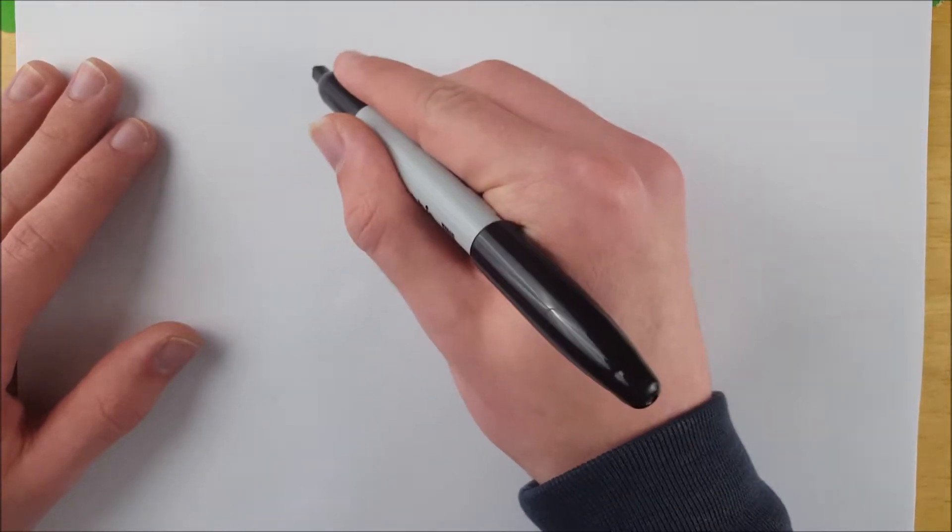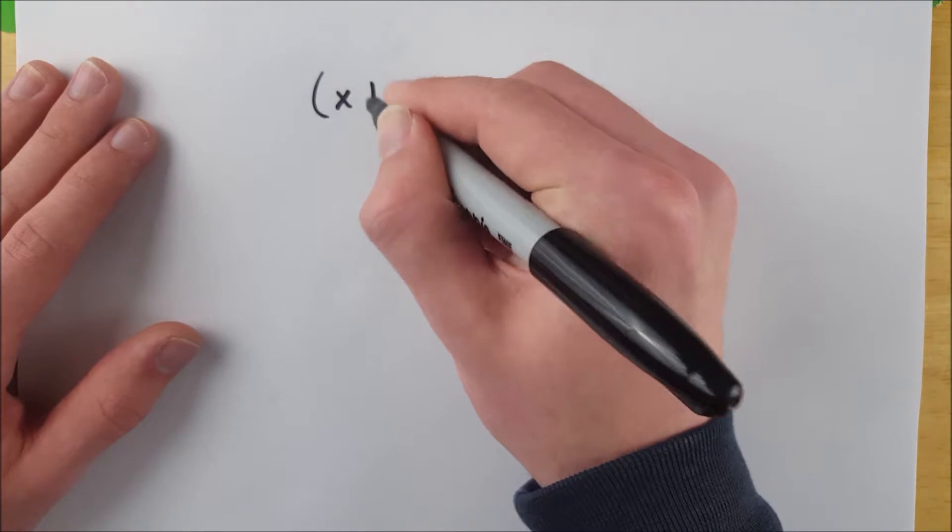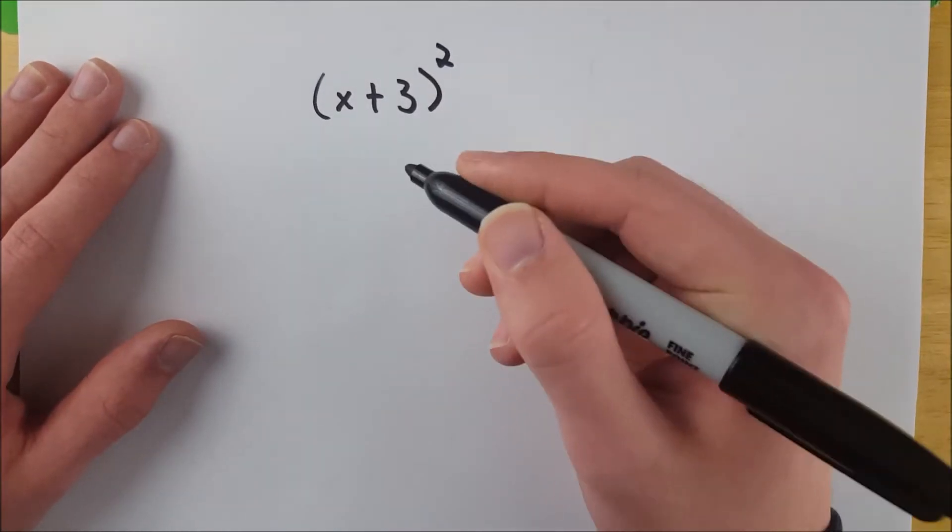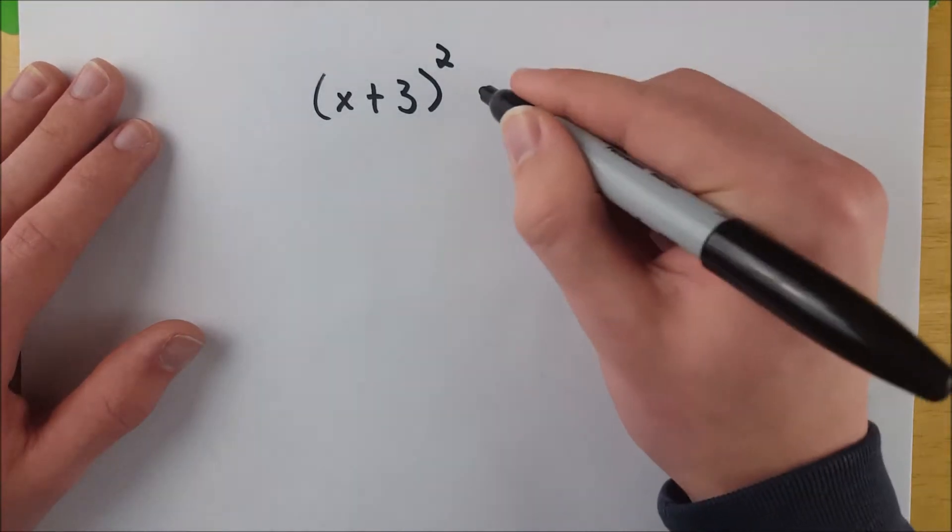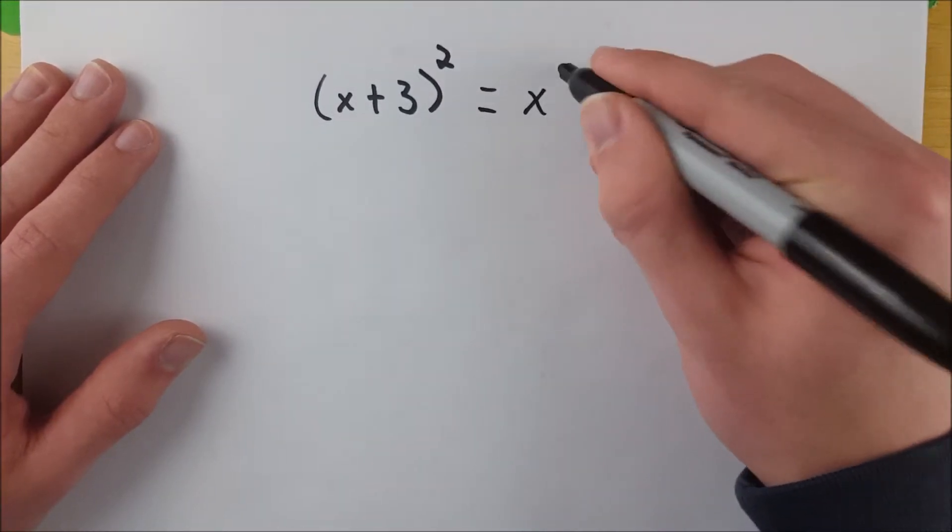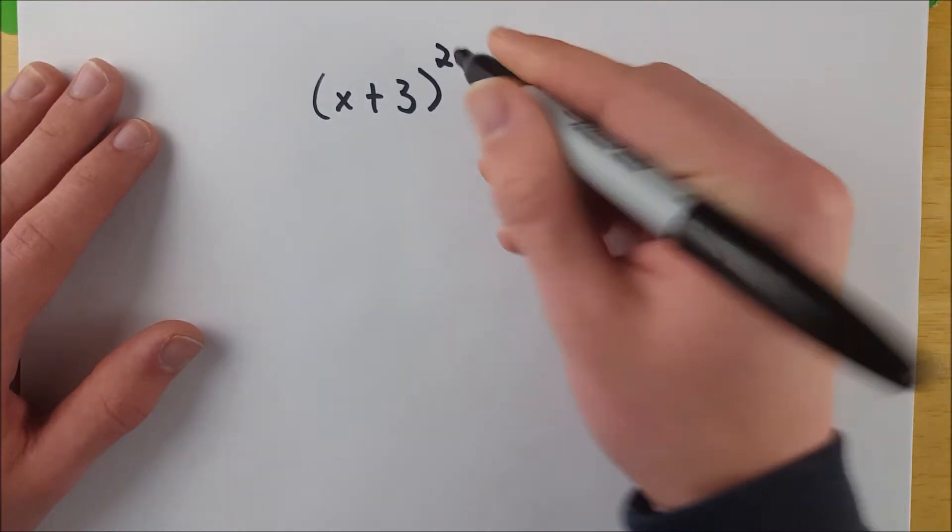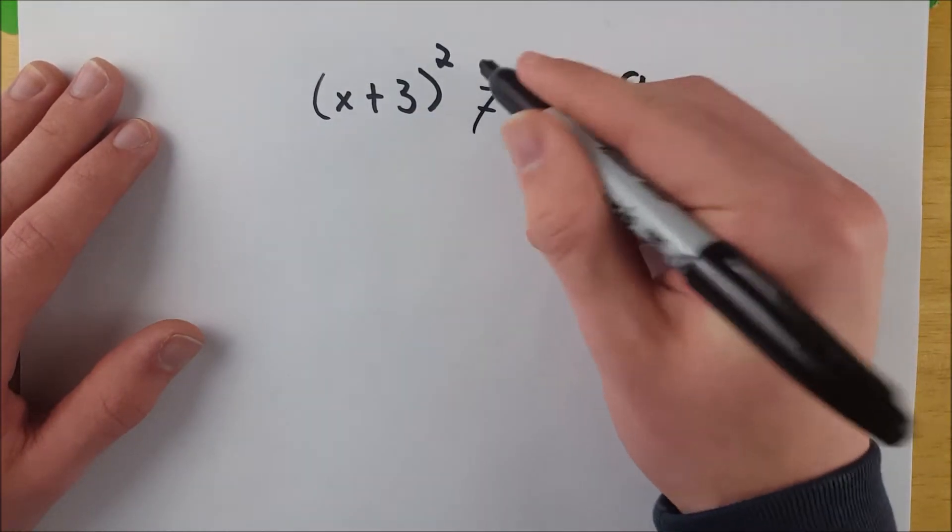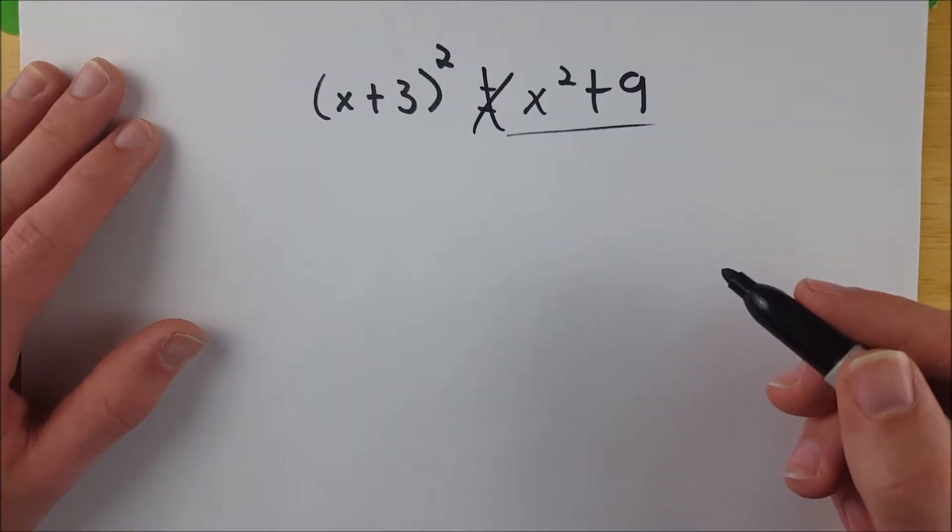So this is how not to do it, and it's going to hurt me to write it out. Let's say we got something like (x + 3)². I say, oh, (x + 3)², no problem. That's just x² + 9. Just distribute that exponent. x² is x squared, 3² is 9. Bada bing, bada boom. That's wrong. Don't do it like that.